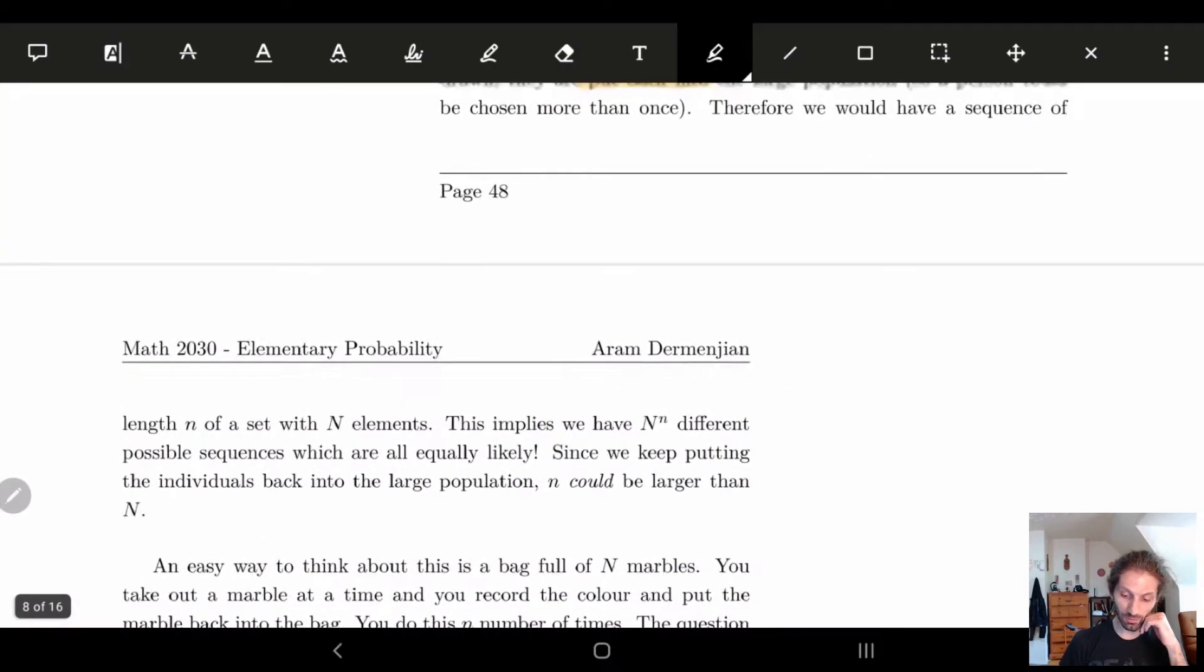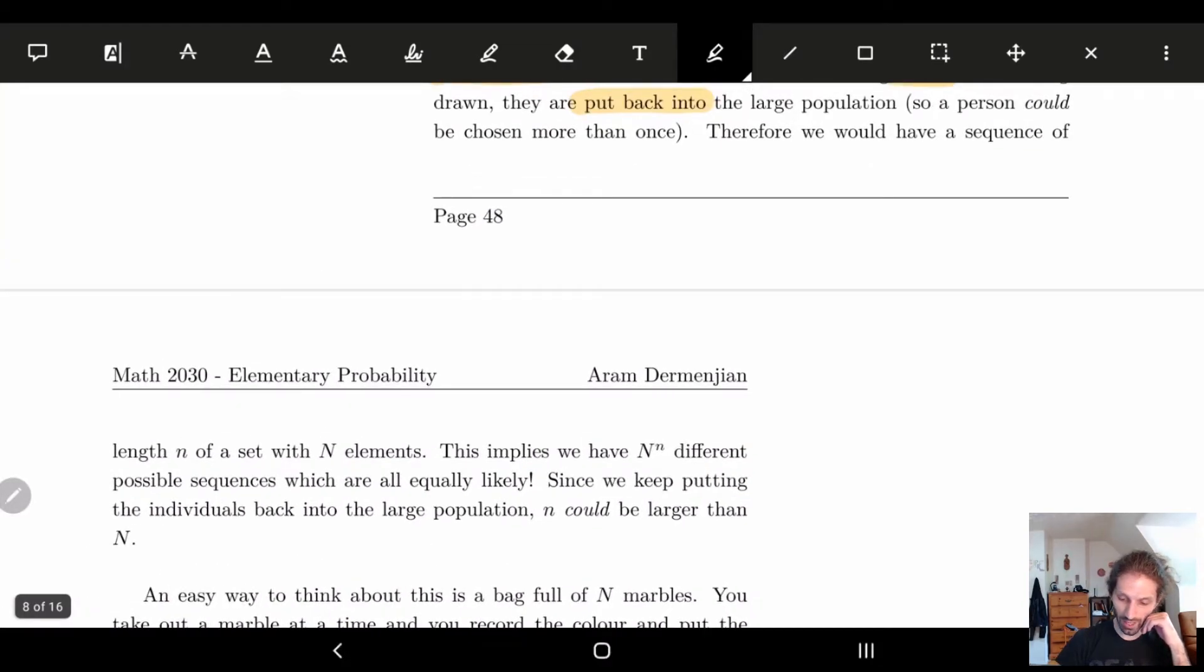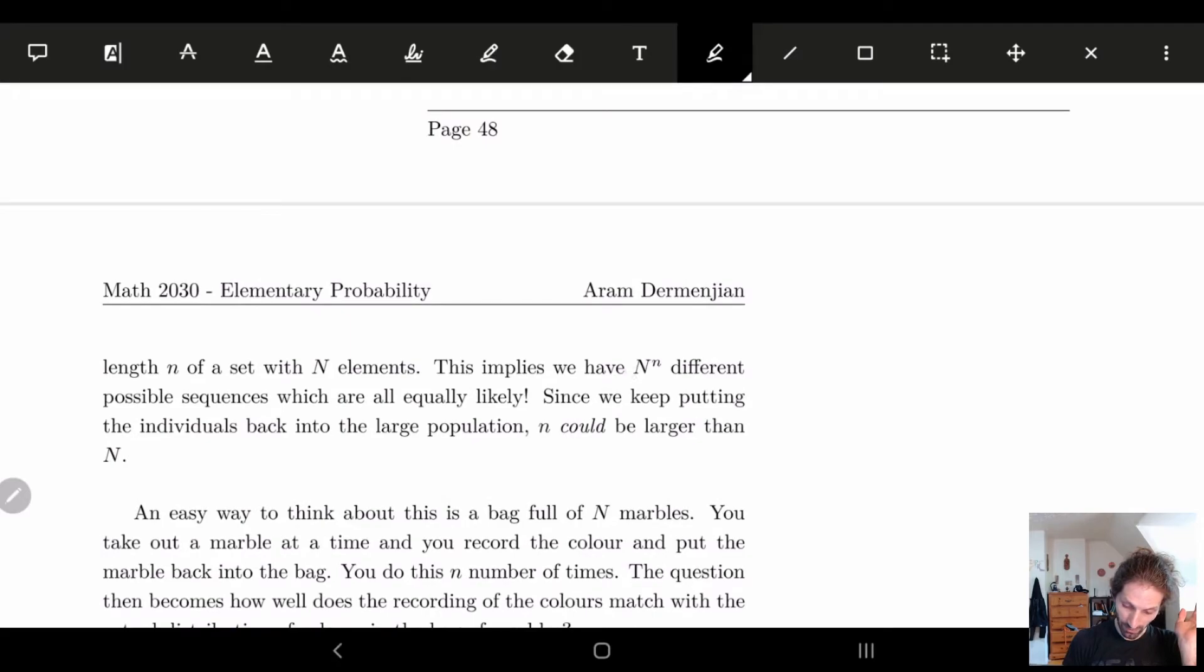Therefore, what we end up having is, if you remember our counting things, what we're going to have is a sequence. We choose one person, we choose someone else, or we choose a person, we choose a person, we choose a person. But each of the options gives us big N kind of options here. So that gives us that we have N to the n different possible sequences, different possible ways of ordering these people. That's a lot of people.